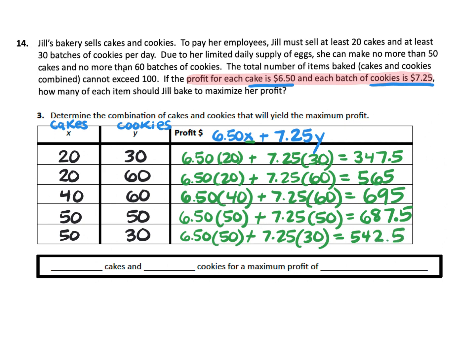So now we have all of those profit amounts and we're concerned with maximum profit. We want to make as much money as possible. So if we look at all five of those numbers, the biggest number there is 695. So that is the combination that we want. So how many cakes is that? Let's go back right here. 40 cakes. Cakes is X. 60 cookies. And then the maximum profit, that's a dollar amount, is $695.